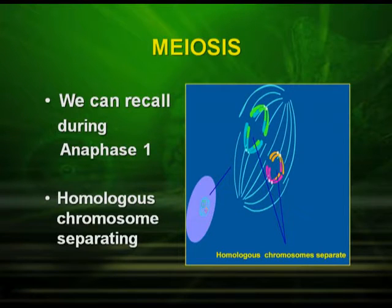Let us recall meiosis that you have studied. During meiosis I, the homologous chromosomes get separated. In the same way, when Mendel studied the second law — the law of segregation — the two alleles get separated. Till now we talked about the monohybrid cross. Now let us see what happens in a dihybrid cross.